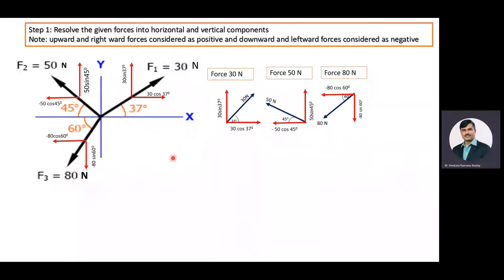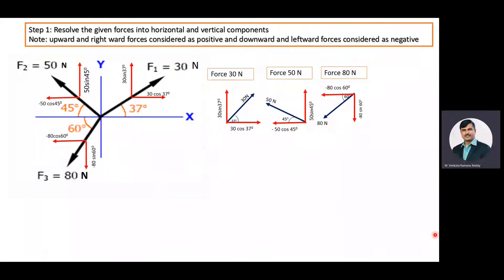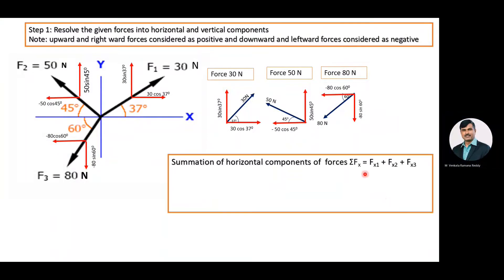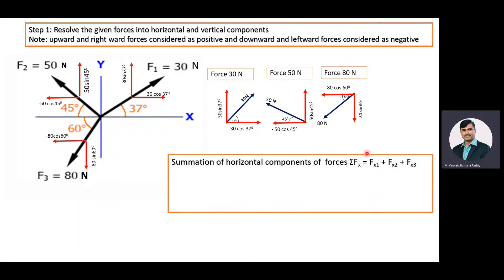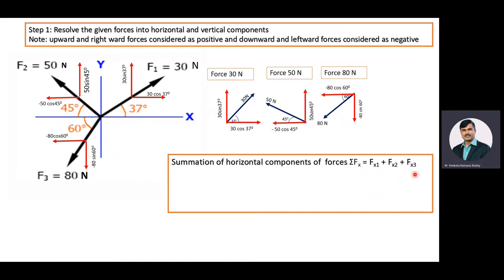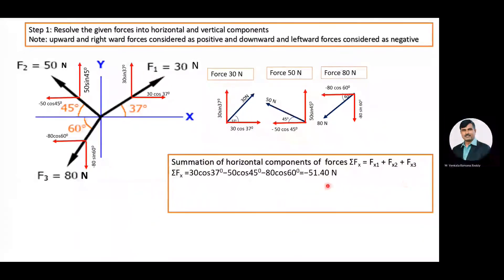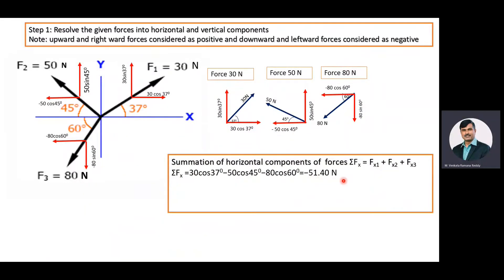Then we will find the summation of horizontal and vertical components. First, we find the summation of horizontal components — sigma Fx is equal to Fx1 plus Fx2 plus Fx3. Here, Fx1 is 30 cos 37 degrees, Fx2 is minus 50 cos 45 degrees, and Fx3 is minus 80 cos 60 degrees. After substituting and simplifying these values, we get sigma Fx equal to minus 51.40 Newton.